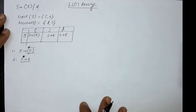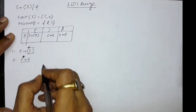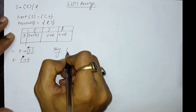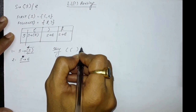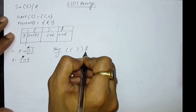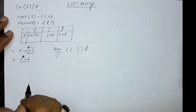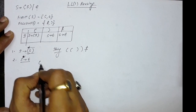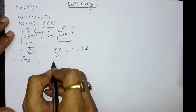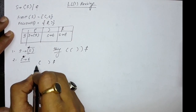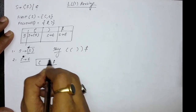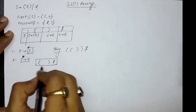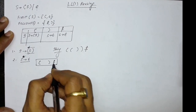For example, let us check the string opening bracket, closing bracket followed by dollar. This is a simpler string. For every string, we append a dollar at the end. In this string we have three symbols: opening bracket, closing bracket, and dollar.